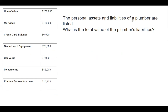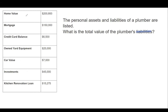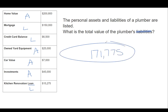We're not asking for net worth this time — we're asking for liabilities. A home value is an asset. A mortgage is a liability. A credit card balance is a liability. Owned yard equipment is an asset. Car value is an asset. Investments is an asset. But a kitchen renovation loan is a liability. So we add up the liabilities: 150,000 plus 6,500 plus 15,275. The total liabilities is $171,775.